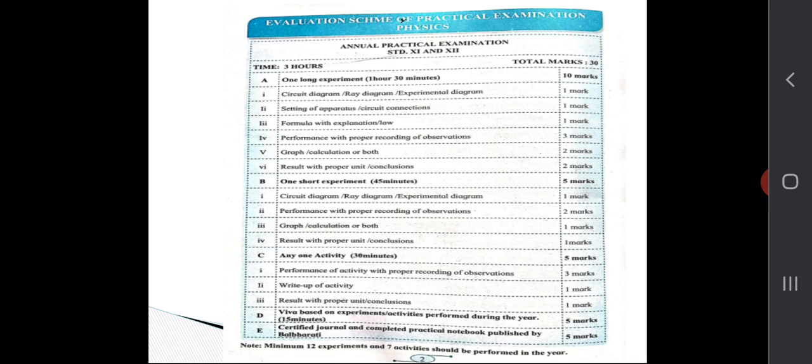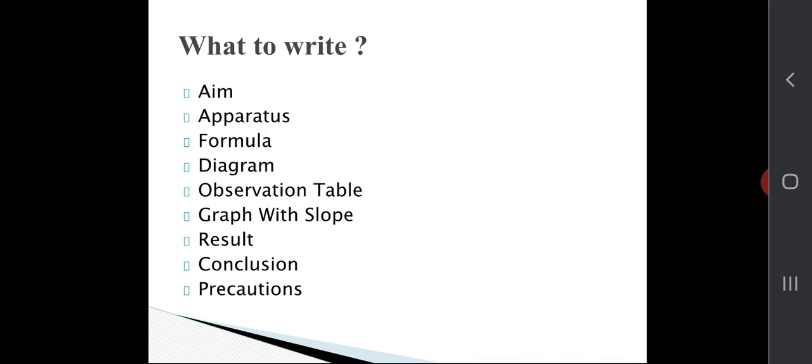What to write in your journal? Basically, we'll write aim, apparatus, formula, diagram, observation table, graph with slope. Now, one point I want to clear: you have to find out the slope on the same graph paper with pencil only. Slope calculation should not be separately on lining paper. Then result, conclusion, and precautions.